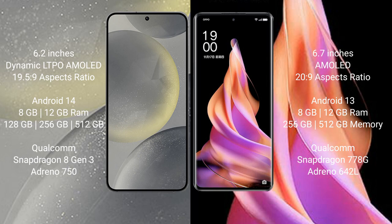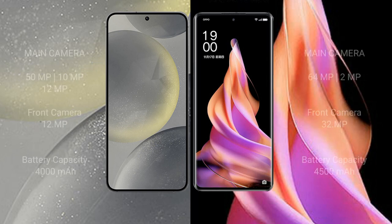Oppo Reno 9 comes with 8GB and 12GB RAM options, with 256GB internal storage. It is powered by a Qualcomm Snapdragon 778G processor, with GPU Adreno 642L.